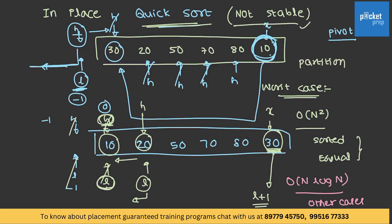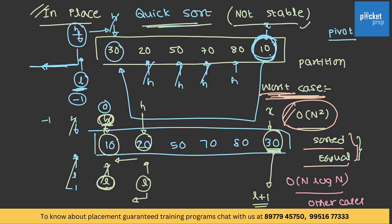By default, quick sort is not a stable algorithm, but it is in-place — it does not use any extra memory beyond the input provided. Analyzing time complexity: the worst case is O(n²), which occurs when the array is completely sorted or all elements are equal, because it requires all comparisons in those cases. In all other cases, the complexity is O(n log n). Quick sort also uses divide and conquer — we take a particular element, place it in its correct position, and repeat the same approach for the entire array.